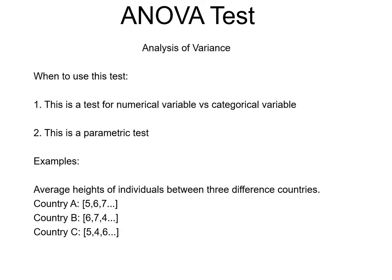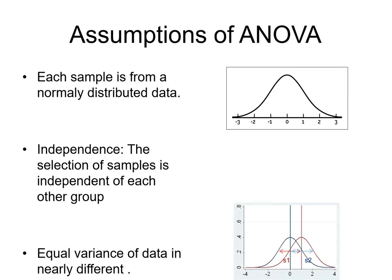Now moving on to its assumptions. Its assumption says that each sample is drawn from a normally distributed data, that is the population from which in each group the samples will be drawn is normally distributed. Then comes the second assumption that the selection of samples is independent of each other group, so in each group there is no dependency while selecting the samples.